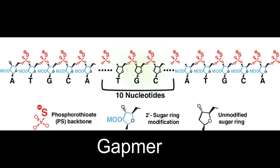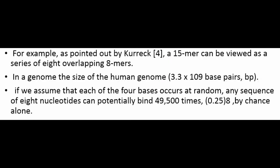The phenomenon of irrelevant cleavage occurs because short stretches of nucleotides can bind promiscuously in most genomes. For example, as pointed out by Coruк, a 15-mer can be viewed as a series of 8 overlapping 8-mers.